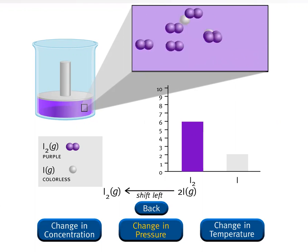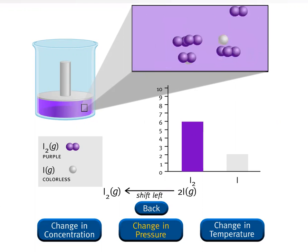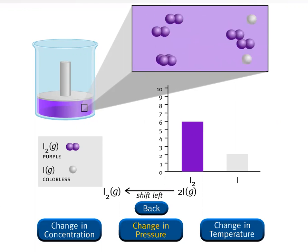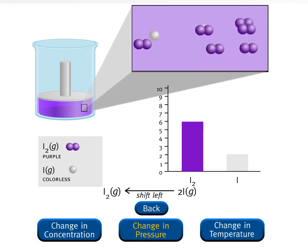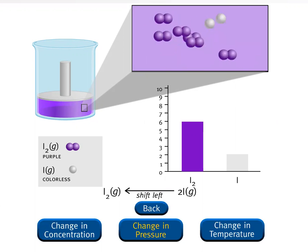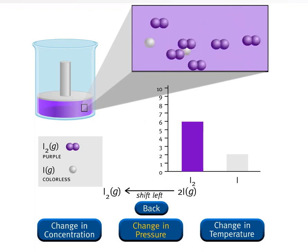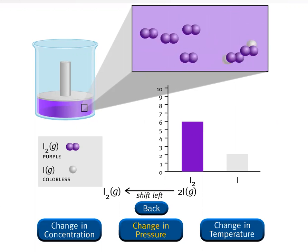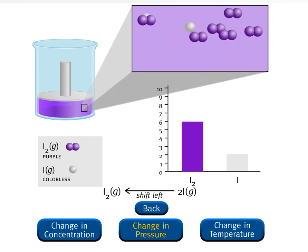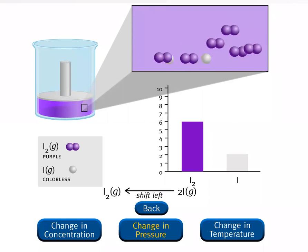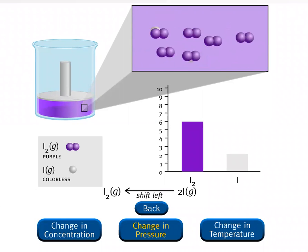As more iodine molecules, which have a purple color, are produced, the color of the equilibrium mixture darkens. This can be seen in the macroscopic view. Note that the total number of gas particles has decreased from 10 to 8.